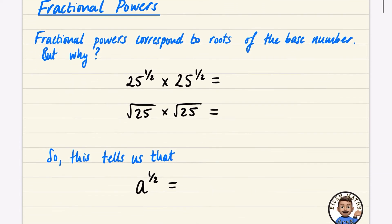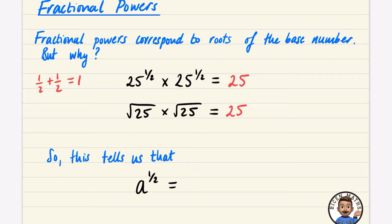Fractional powers correspond to roots of the base number — but why? Consider 25 to the power of 1/2 multiplied by 25 to the power of 1/2. They have the same base, so we add the powers: 1/2 plus 1/2 equals 1, giving 25 to the power of 1, which is just 25. Similarly, the square root of 25 times the square root of 25 equals 25 — that's 5 times 5. By direct comparison, 25 to the power of 1/2 must be the same as the square root of 25.